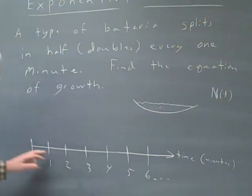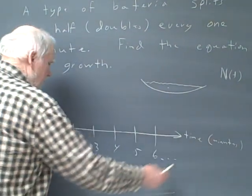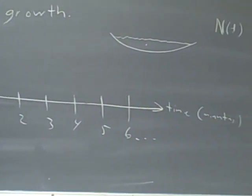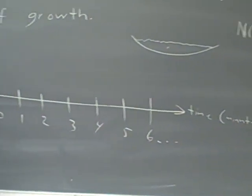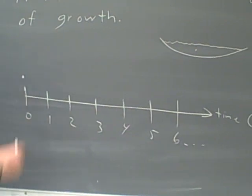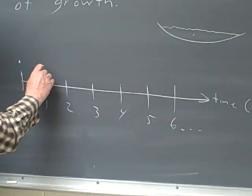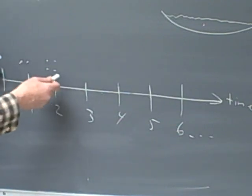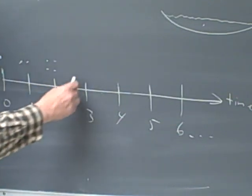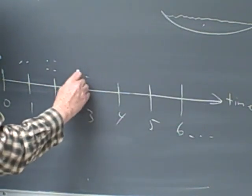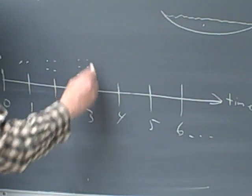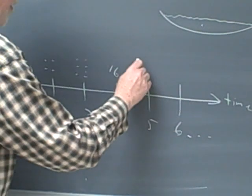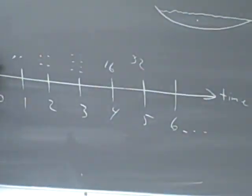We're going to start by taking a number line, with time in minutes. At zero, we only have one bacterium. But after one minute, we've got two. After two minutes, we've got four, because they all split in half every minute. Then we've got eight. In four minutes, we've got 16. In five minutes, we've got 32. So they're growing like that.